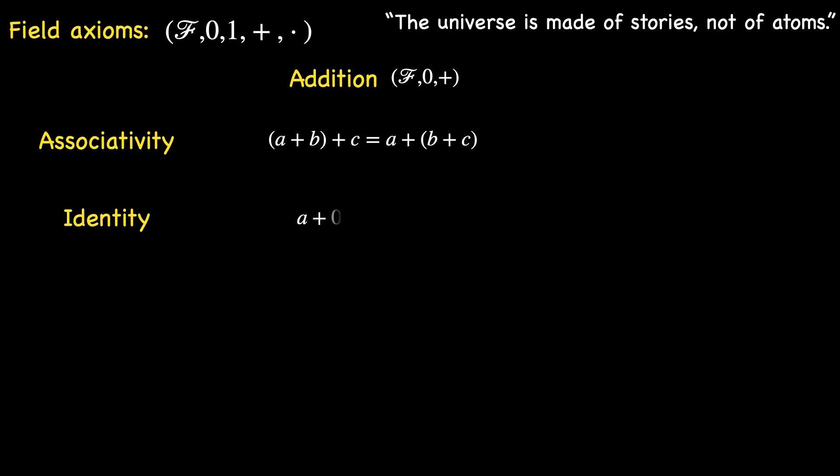Zero steps into the limelight as the identity element for addition. In the realm of F, adding 0 to any element A leaves A untouched, making A plus 0 equals 0 plus A, and both equal to A.